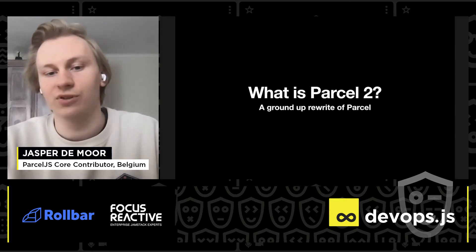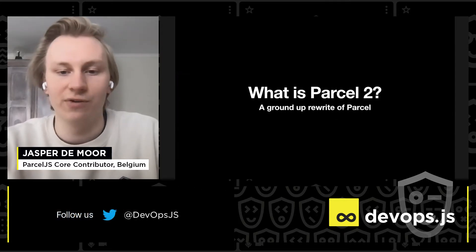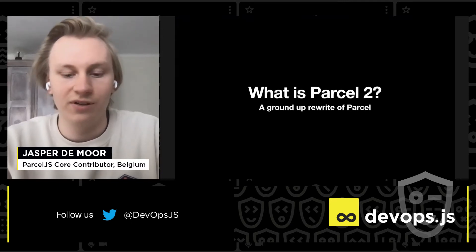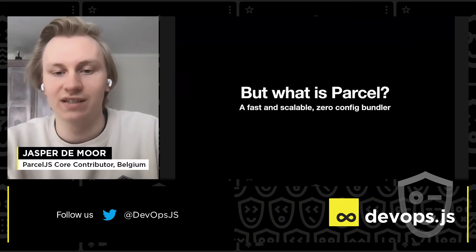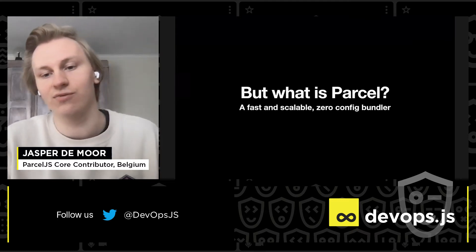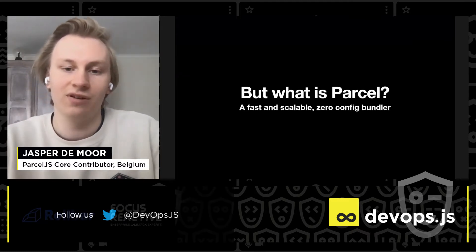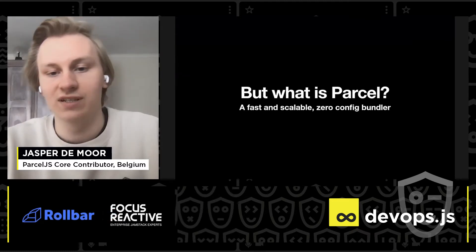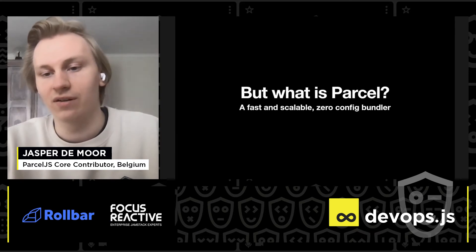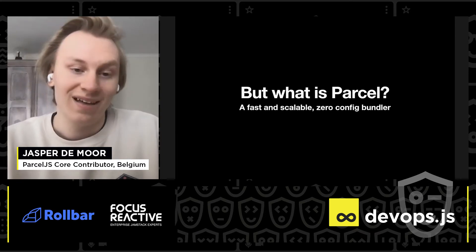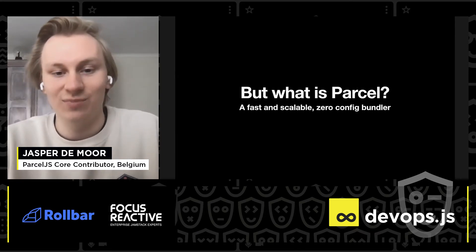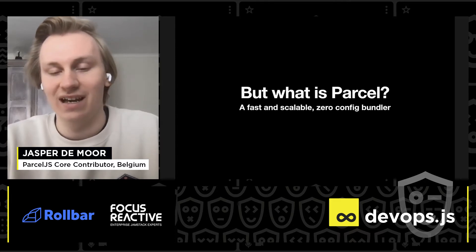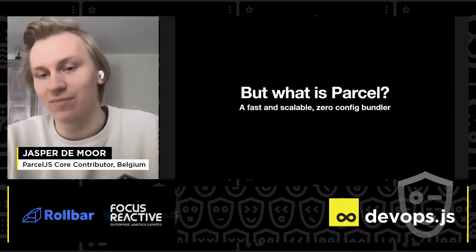So what is Parcel 2? Parcel 2 is a ground up rewrite of Parcel 1. What is Parcel 1? Well, Parcel 1 is a fast and scalable zero configuration web application bundler. It's basically like Webpack or Rollup, with a big difference in how we actually handle bundling.